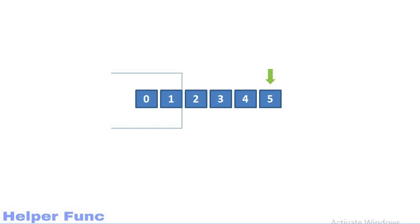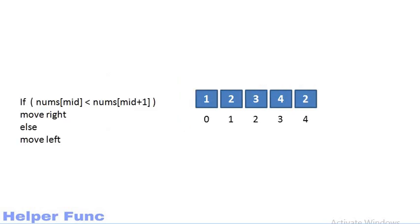Thus we will be using binary search to solve this problem. If the present number is smaller than the next number, then we are sure about getting a peak element on the right side and we move right. Otherwise, we are sure that there is a peak element on the left side and we move left.